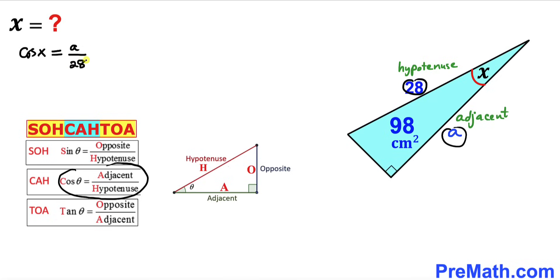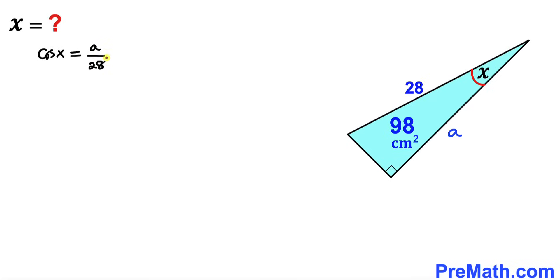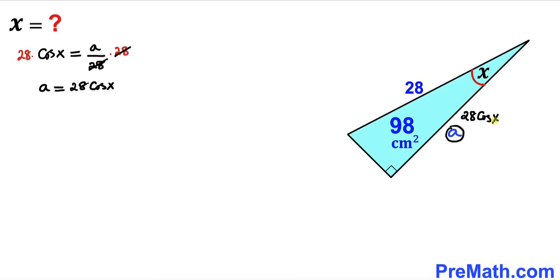We can write 28 at the denominator and now multiply both sides by 28 to isolate a. The 28s cancel, so therefore a turns out to be equal to 28 times cosine of x. In other words, this whole side length is going to be 28 times cosine of x.